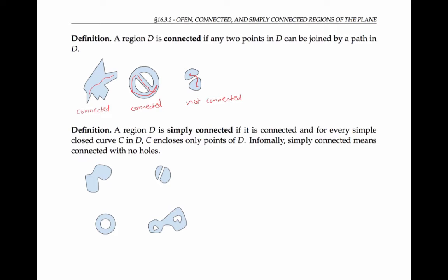Our next and last definition is simply connected. A region is called simply connected if it's first of all connected, and second of all, for every simple closed curve C in the region, C encloses only points of the region. Informally, simply connected means connected with no holes. Let's see a few examples.